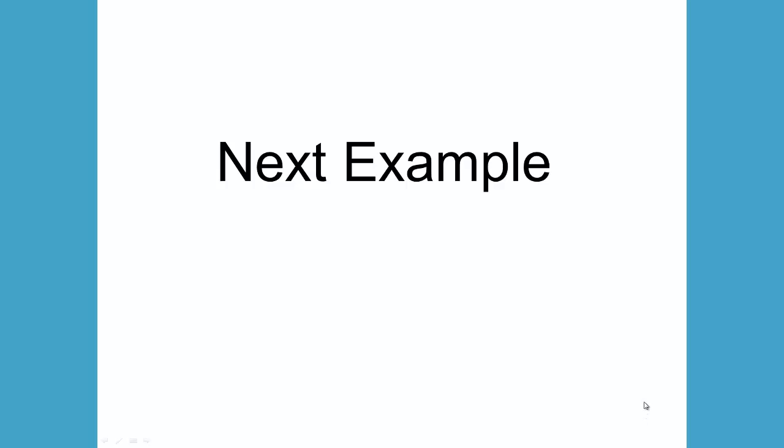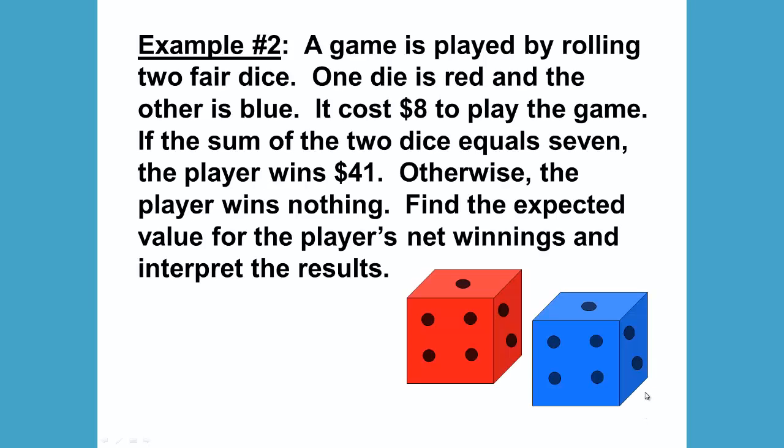We have another example, Example 2. A game is played by rolling two fair dice. One die is red and the other is blue. It costs eight dollars to play the game. If the sum of the two dice equals seven, the player wins $41. Otherwise, the player wins nothing. Find the expected value for the player's net winnings and interpret the results.